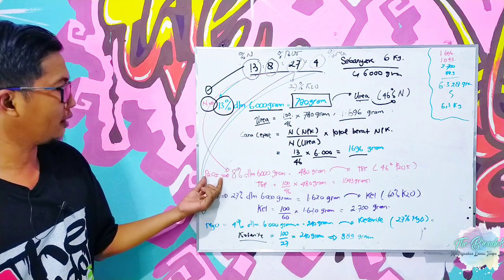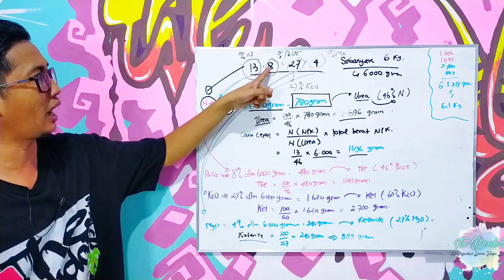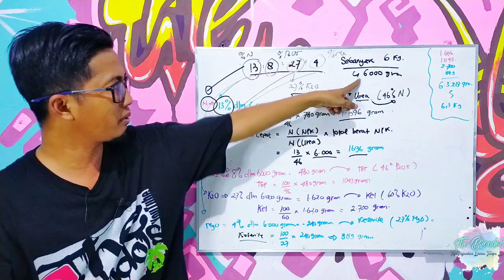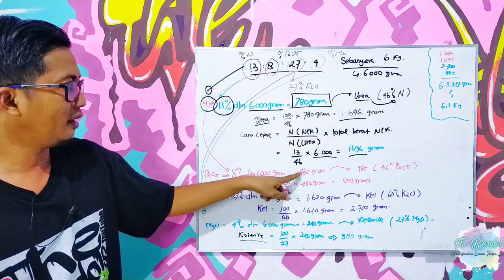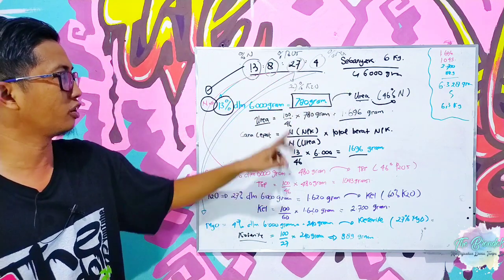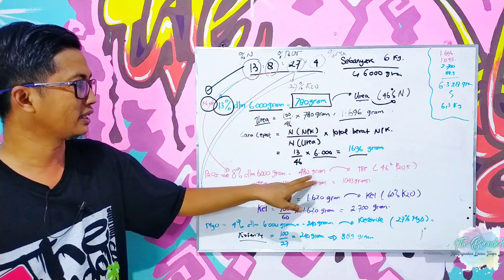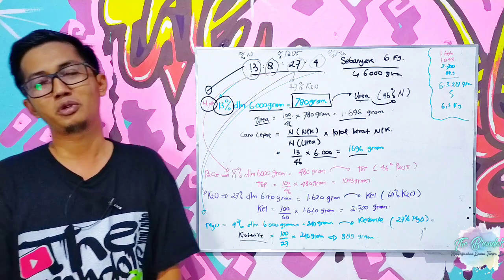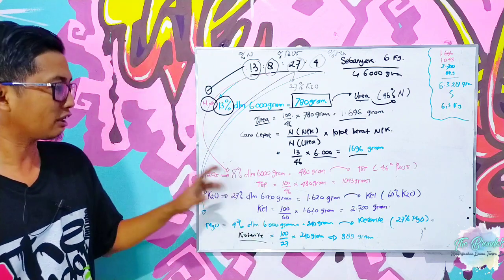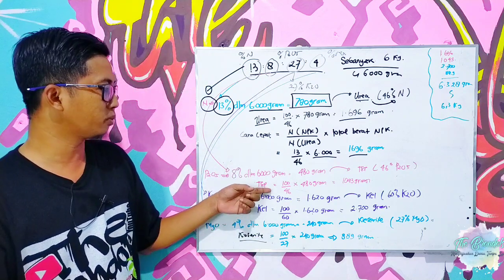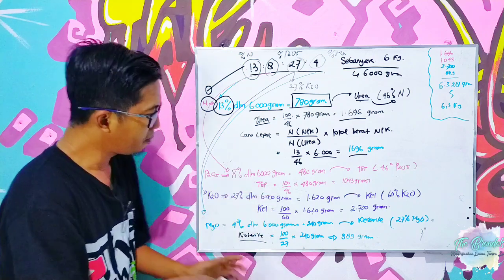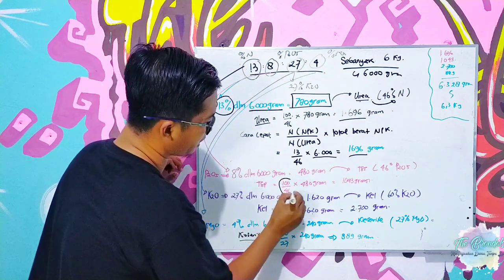Kemudian P2O5-nya, disini 8 gram, 8 persen ini, 8 persen dikalikan 6000 gram, maka sebanyak bahwa pospat yang terkandung di dalam NPK 13-8-27-4 ini adalah sebanyak 480 gram P2O5.